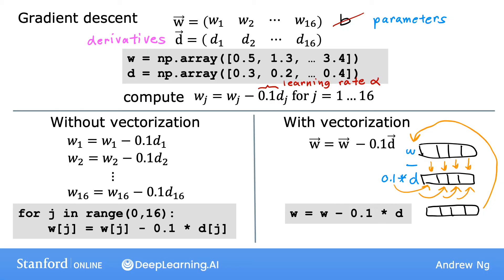Maybe the speed difference won't be huge if you have 16 features, but if you have thousands of features and perhaps very large training sets, this type of vectorized implementation will make a huge difference in the running time of your learning algorithm. It could be the difference between code finishing in one or two minutes, versus taking many, many hours to do the same thing.